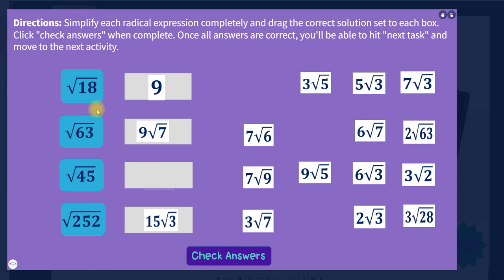Now, if they hit check answers and nothing happens, like no green check marks appear, they don't have any correct. But this is how they'll move through the activity. All of these can be moved anywhere into this green box.